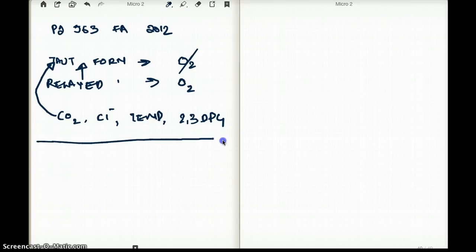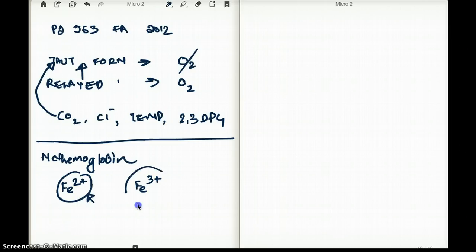The next thing about hemoglobin that I want to talk about is methemoglobin. What is methemoglobin? Now iron is found in two states, Fe2+ and Fe3+. Usually hemoglobin is going to be the Fe2+. But whenever it's Fe3+, when the hemoglobin has Fe3+, we don't call it hemoglobin anymore. We call it methemoglobin.